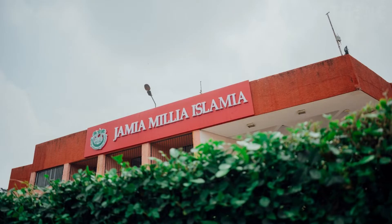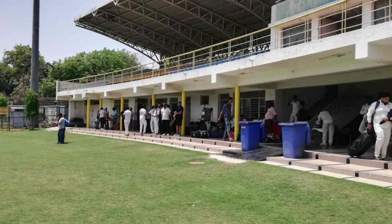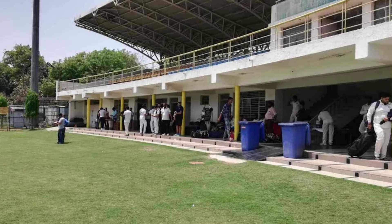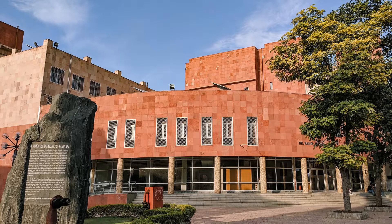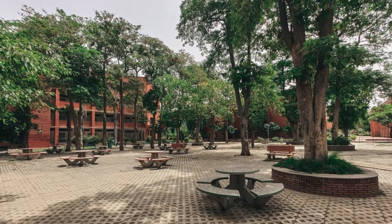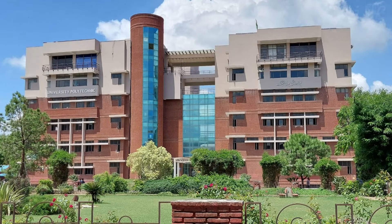So the final one is Jamia Millia Islamia New Delhi. It was founded in 1920 and became a central university in 1988. Its architectural department offers various degree courses including Bachelor of Architecture. With a scenic Nawab Mansur Khan Sports Complex, extensive university library system consisting of 6 lakh books and numerous centers for research and innovation, Jamia Millia Islamia promises a fulfilling campus experience.